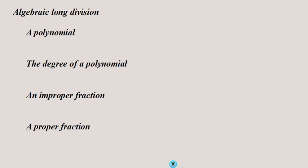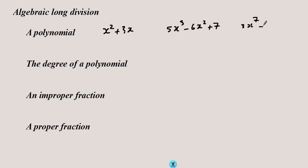How can we do long division in algebra? Well, this is what we learn today. But first of all, let's make sure that we know certain terminology. What is a polynomial? A polynomial is an expression in x where the powers of x are positive integers. So for example, x squared plus 3x is a polynomial, and 5x cubed minus 6x squared plus 7 is a polynomial.